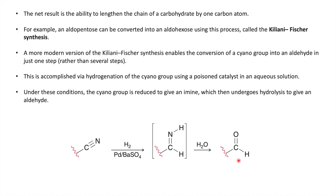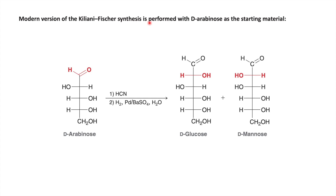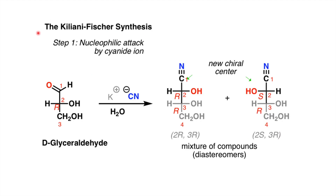The conversion of cyano into aldehyde by Fischer takes place in multiple steps, but in the advanced method you can perform it in a single step using the poisoned catalyst. This is the complete modern version of Kiliani-Fischer synthesis. For example, with D-arabinose (an aldopentose with five carbons), when you treat it with hydrogen cyanide, perform hydrogenation in the presence of palladium and barium sulfate, and further treat with water, it gives D-glucose and D-mannose - one carbon extended to aldohexoses, and you get a pair of stereoisomers.